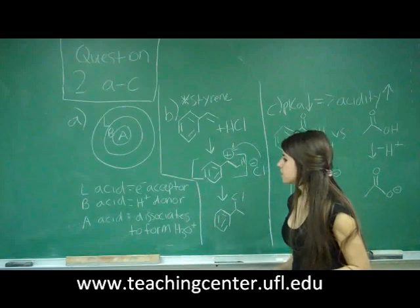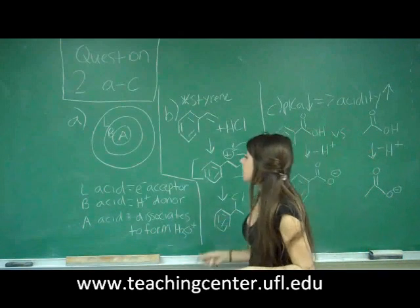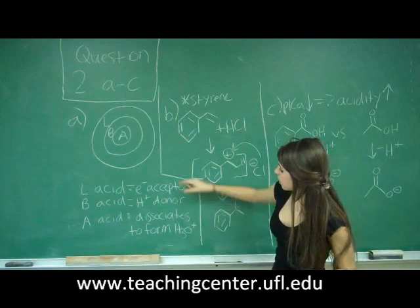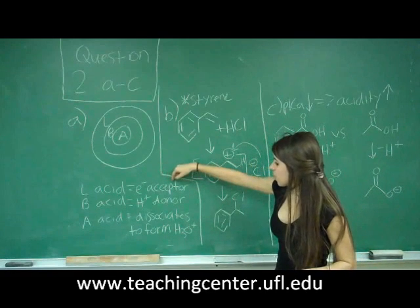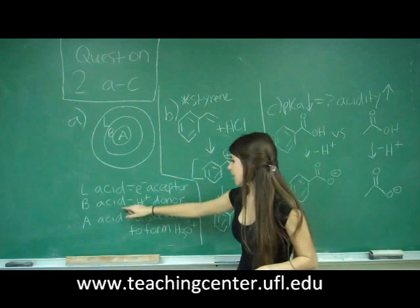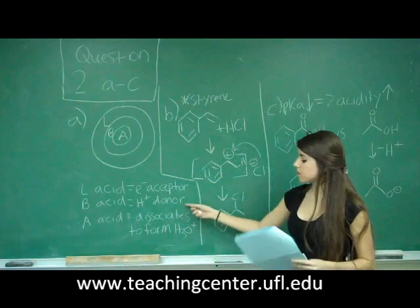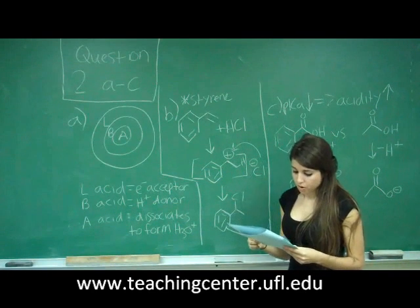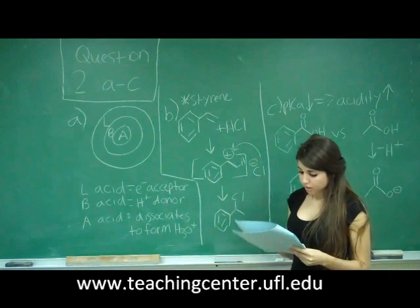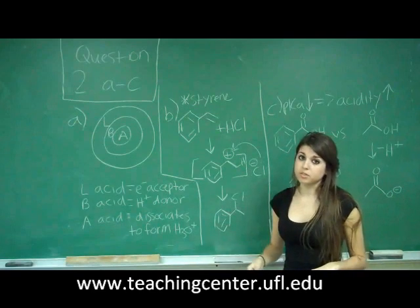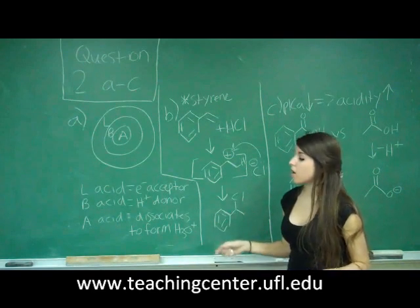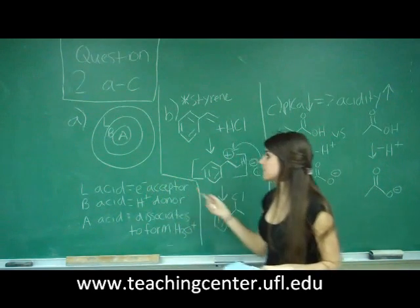But another way to kind of think of it is, okay, so a Lewis acid is an electron acceptor, and a Bronsted acid is a proton donor. So in order to be a proton donor, you must be able to accept electrons. So that's why all Bronsted acids are Lewis acids.